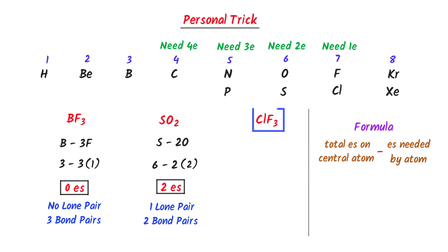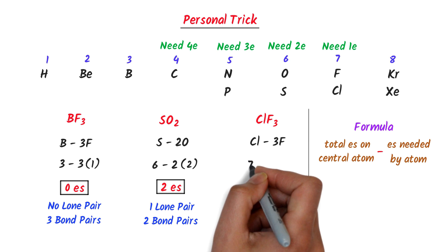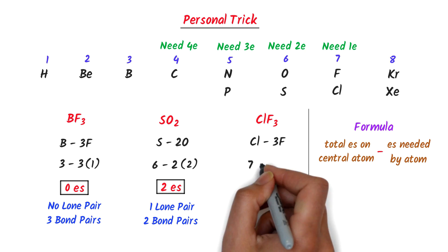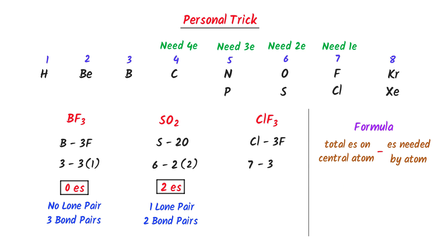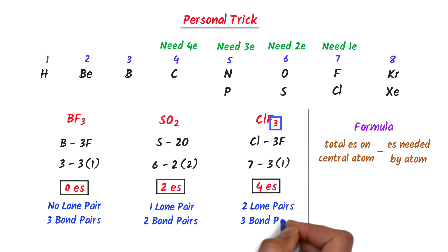In case of ClF₃, I write chlorine plus 3 fluorine. We know that the central atom is chlorine and it has 7 electrons in its valence shell, minus 3, and fluorine needs 1 electron. So I get 7 minus 3 equals 4 electrons. Thus there are 2 lone pairs of electrons present on the central atom. This 3 subscript means that there are 3 bond pairs of electrons present in this molecule.